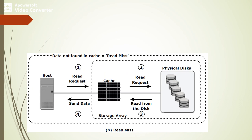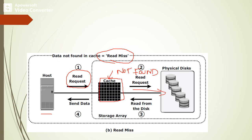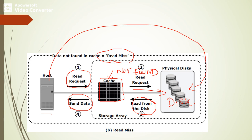In a read miss, the host sends a read request to the cache but the requested pages are not found within the cache. At that instant, the cache forwards the read request to the physical disk. The disk transmits the data into the cache, and after that the data is transmitted to the host. The host is not allowed to access the physical disk directly; instead, data is copied into the cache first, then transmitted to the host.